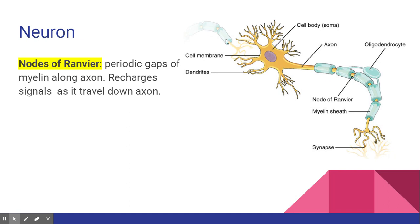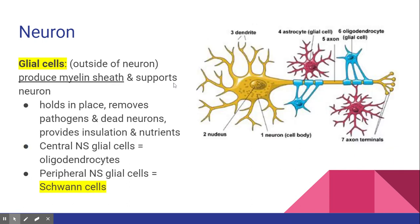Another neuron has its axon terminals connected to the dendrites of the next neuron. Those dendrites receive the message, send it along the axon, and out the axon terminal. Along that axon you've got the myelin sheath, and in between the myelin sheath are the nodes of Ranvier. These nodes allow contact with brain fluid so the axon can maintain the proper chemical balance and recharge signals. Without them, the charge would be lost and the neuron would stop sending the message — the nodes of Ranvier keep reminding it to keep sending.